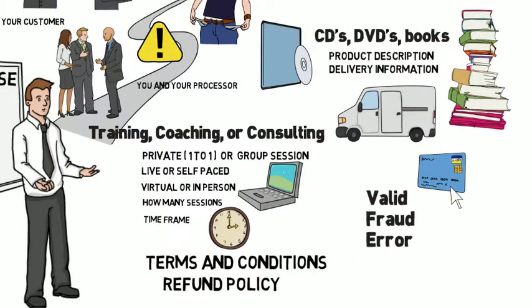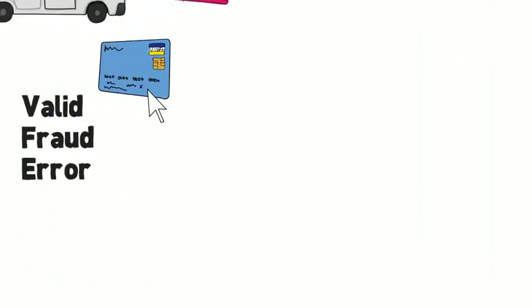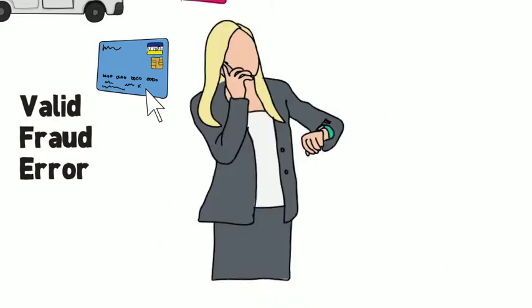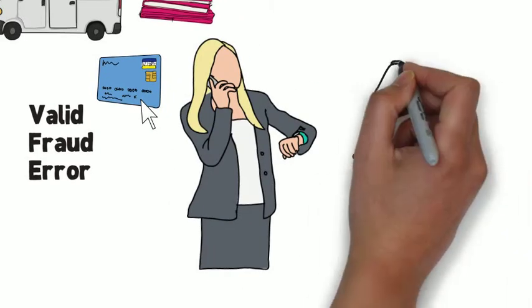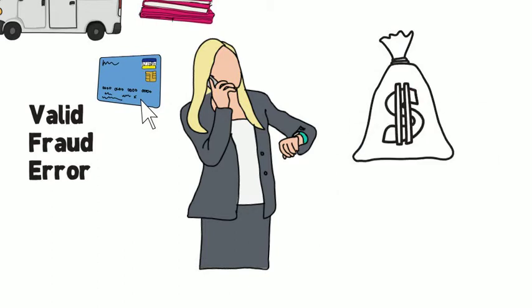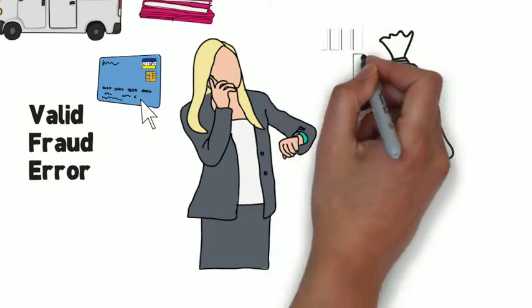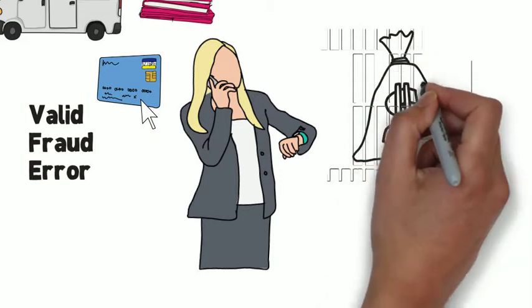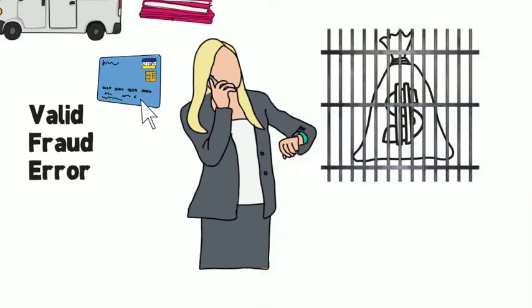Now if they already have the information, their job is done. However, if they don't have all the information, their next steps include an attempt to contact you and a hold on your funds until they can verify the validity of the transaction. Unfortunately, when this happens, it's a case of guilty until proven otherwise.